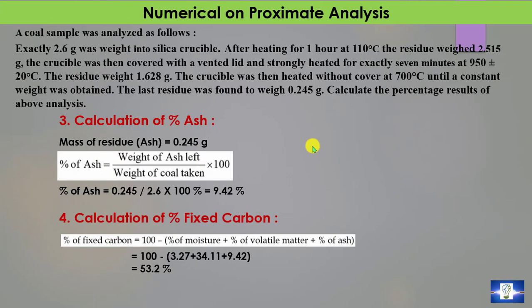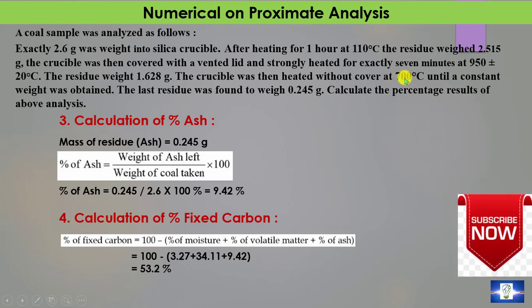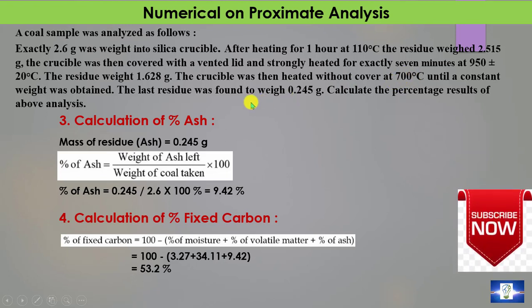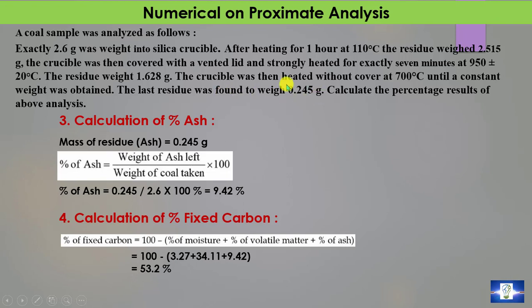For the ash percentage: after heating at 700°C, the residue (ash) is 0.245 grams. Percentage ash equals weight of ash left divided by sample taken (2.6 grams), giving 9.42%. Fixed carbon equals 100 minus (moisture + volatile matter + ash), so fixed carbon is 53.2%.